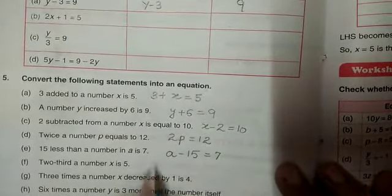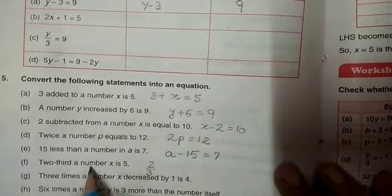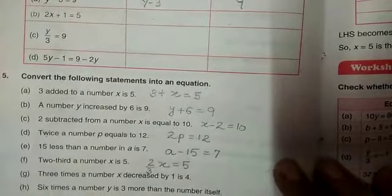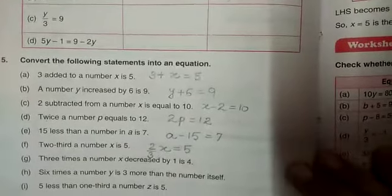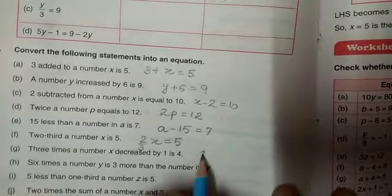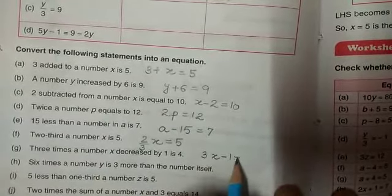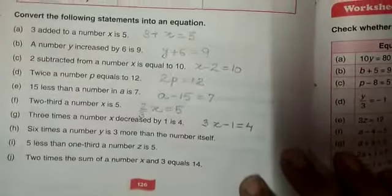15 less than a number, a minus 15 equals 7. 2 third a number, 2 by 3, number is x equals 5. Now, 3 times a number x, when this is decreased by 1, it becomes 4.